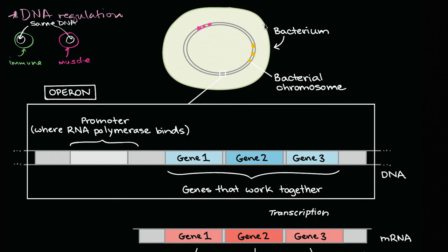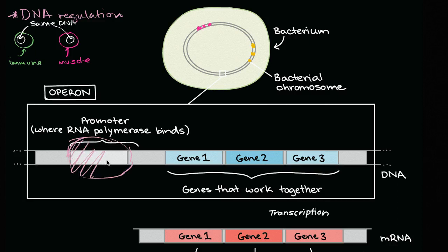When we talked about transcription in general in previous videos, we talked about the idea of a promoter - a gene is a sequence of DNA that's part of the broader chromosome, and RNA polymerase needs to attach someplace. We called that place the promoter, and then the polymerase will transcribe the gene.